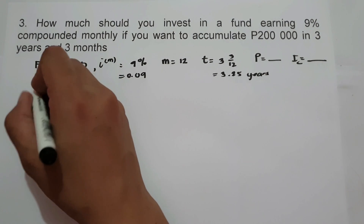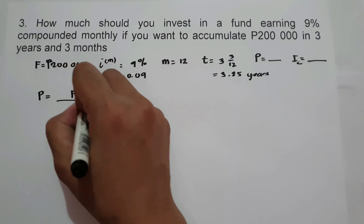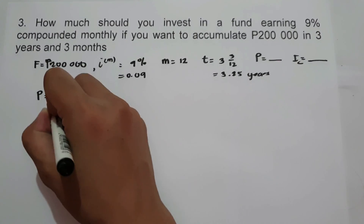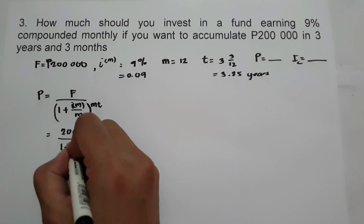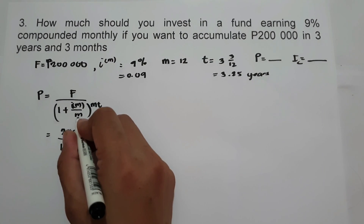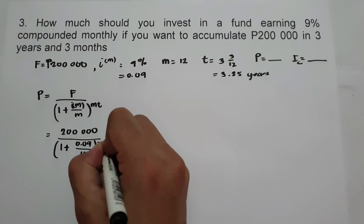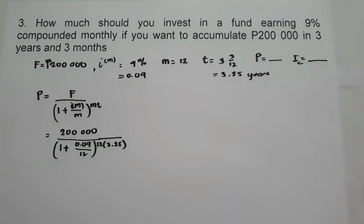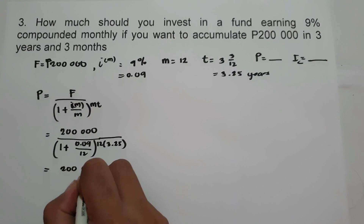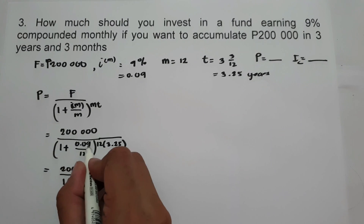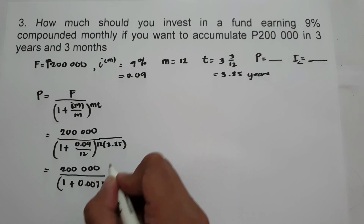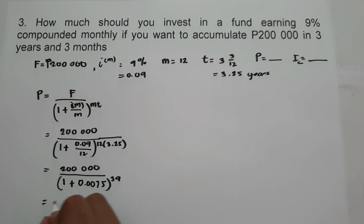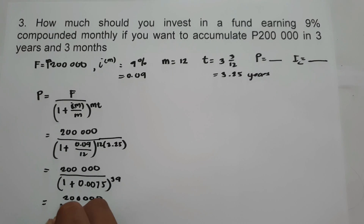To find the present value, we use P equals F over 1 plus nominal rate over M raised to M times T. We have 200,000 over 1 plus 0.09 over 12, raised to 12 times 3.25. Simplifying: 0.09 divided by 12 equals 0.0075, and 12 times 3.25 equals 39. So we have 200,000 over 1.0075 raised to 39.